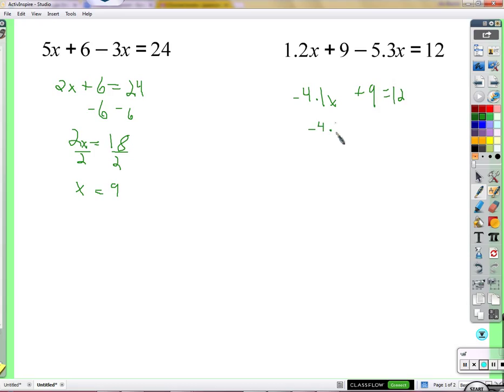Negative 4.1x equals, well, we would subtract 9 from both sides. Right? We get 3. And then we would divide by negative 4.1. Okay? Negative 4.1 divided by negative 4.1 is 1x, right, which is x.